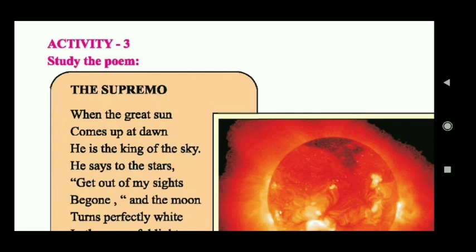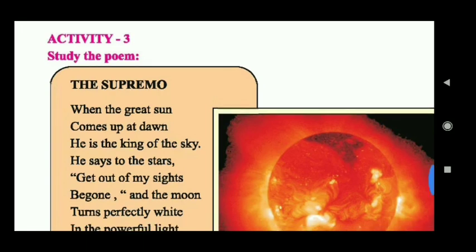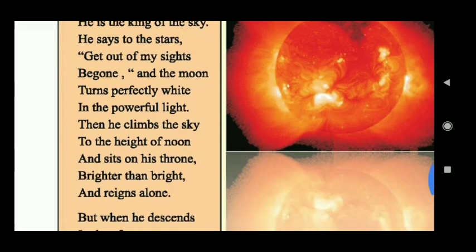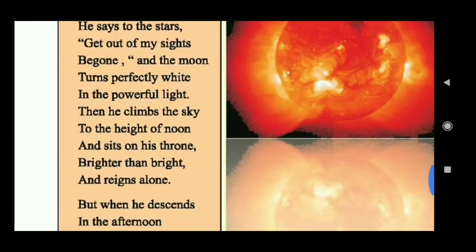The Supremo. When the great sun comes up at dawn, He is the king of the sky. He says to the stars, Get out of my sights, Be gone. And the moon turns perfectly white in the powerful light. Then he climbs the sky to the height of noon and sits on his throne, Brighter than bright, and reigns alone.